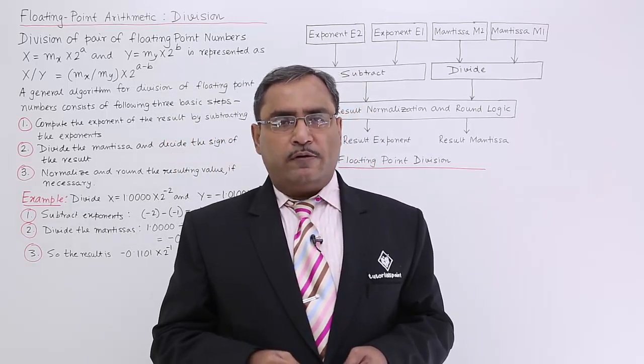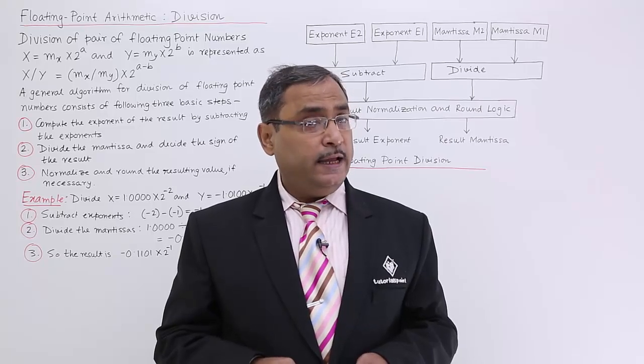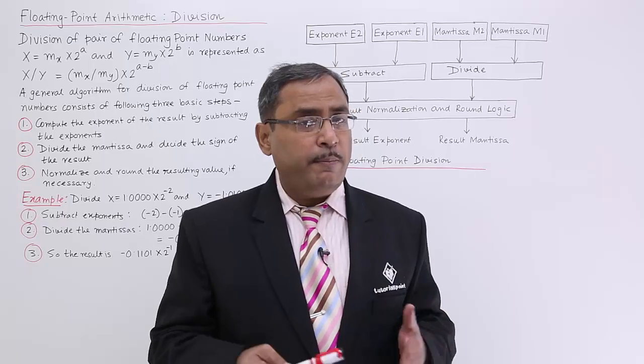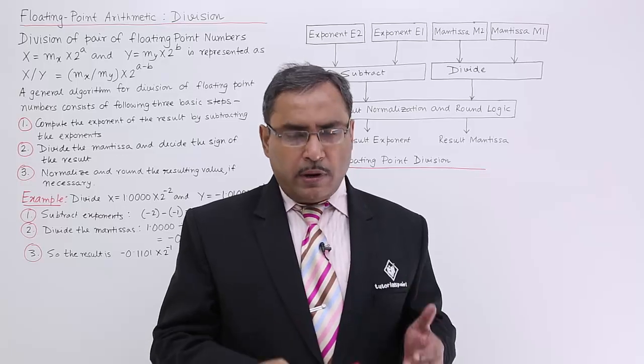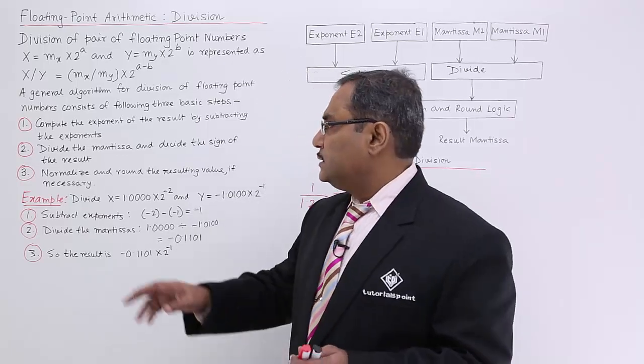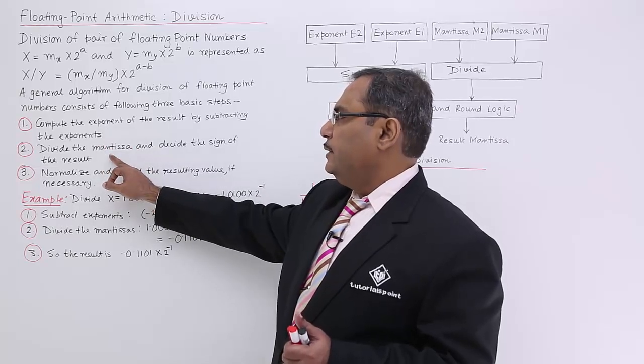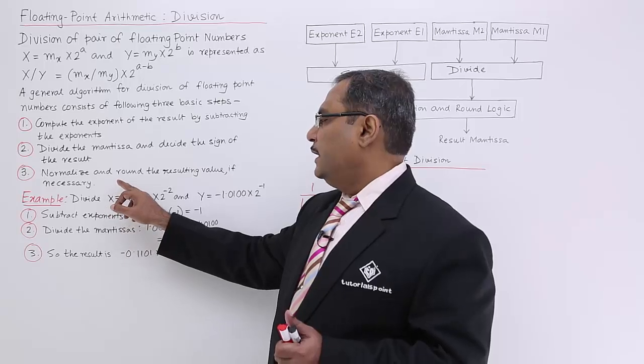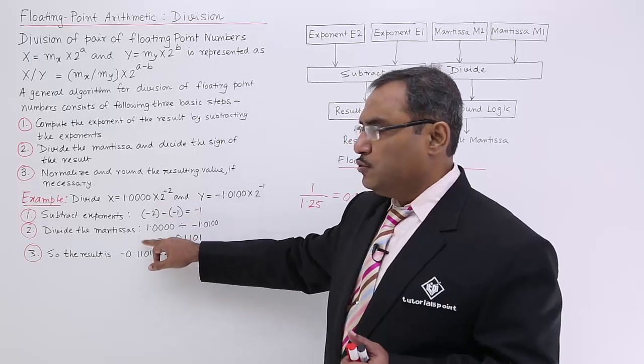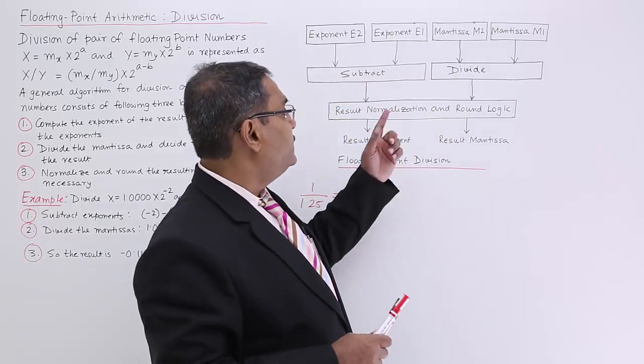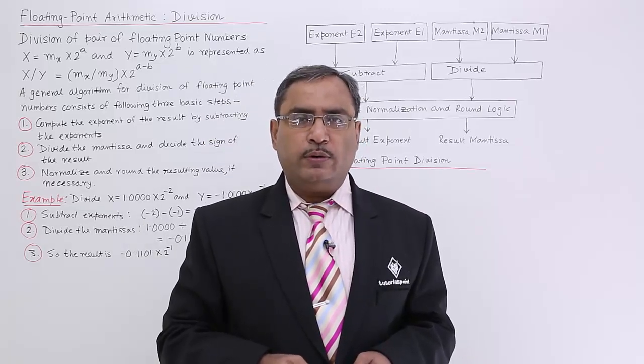So in this video we have covered floating point division, the respective 3 steps, and then how to deal with the exponents, how to deal with the mantissa, and how to deal with the normalization and rounding. These steps are dealing with the exponents, dealing with the mantissa, and normalization and rounding. How the rounding can be done I have shown this one through an example, and this is the schematic diagram for the floating point division operation. So thanks for watching.